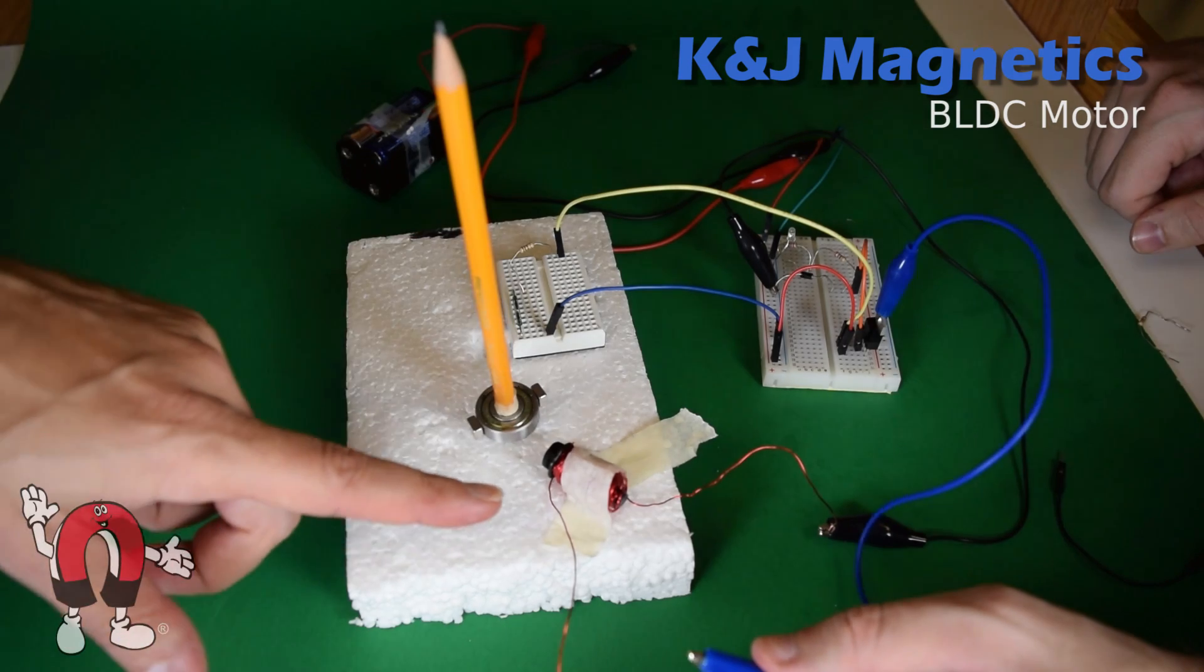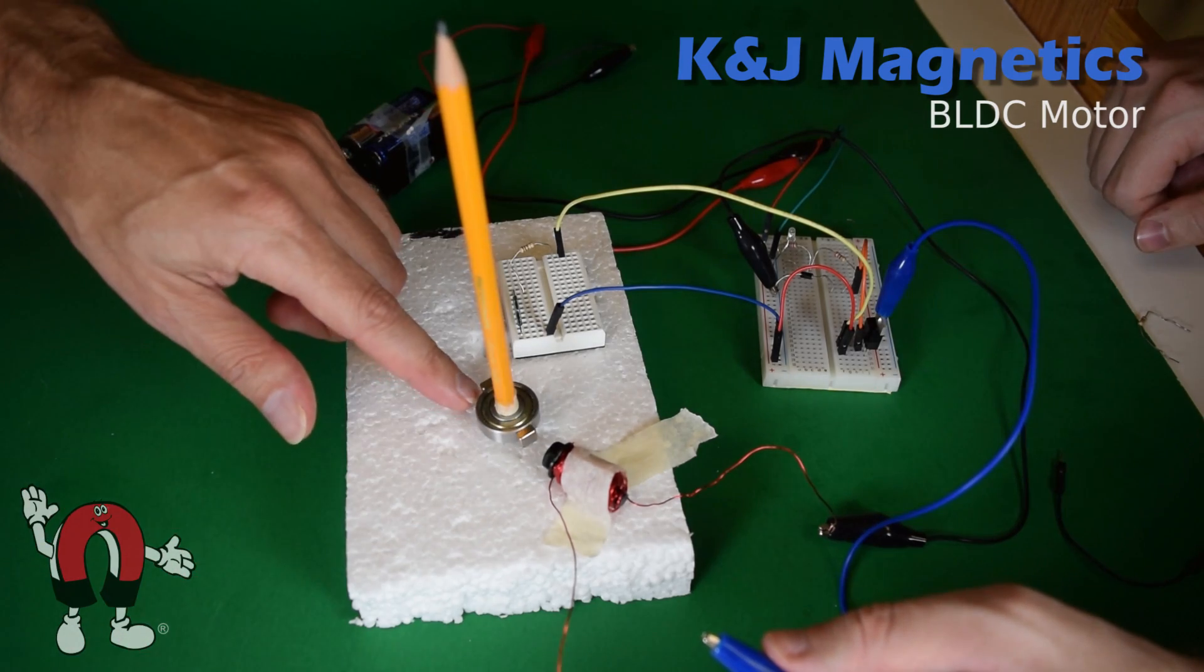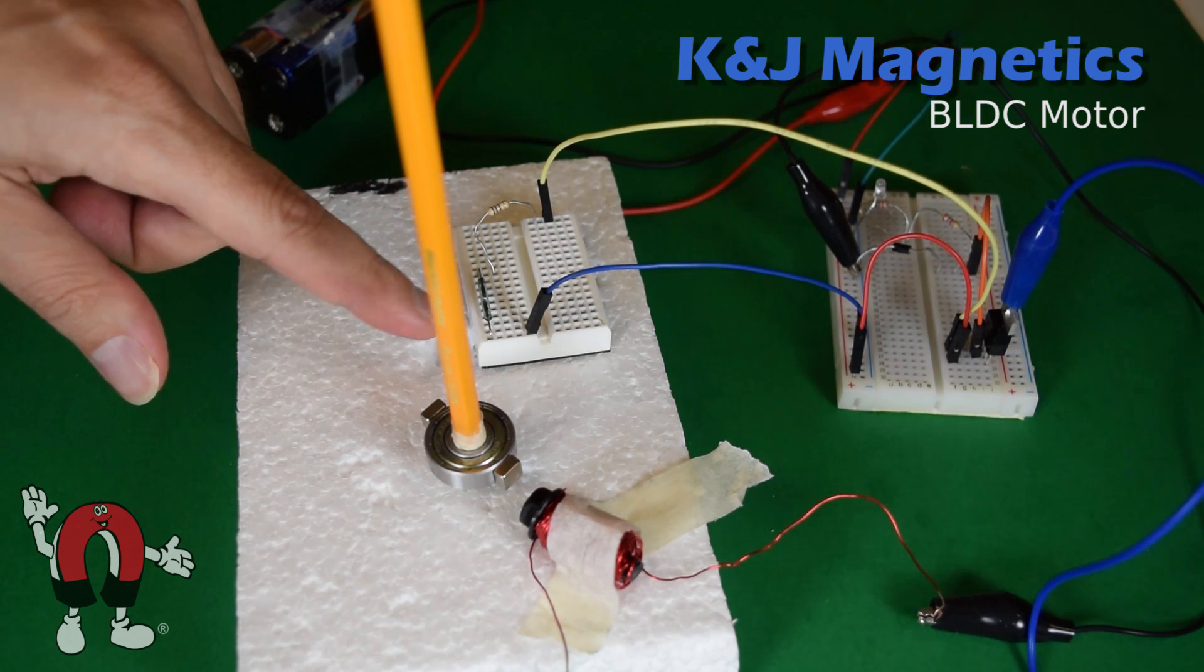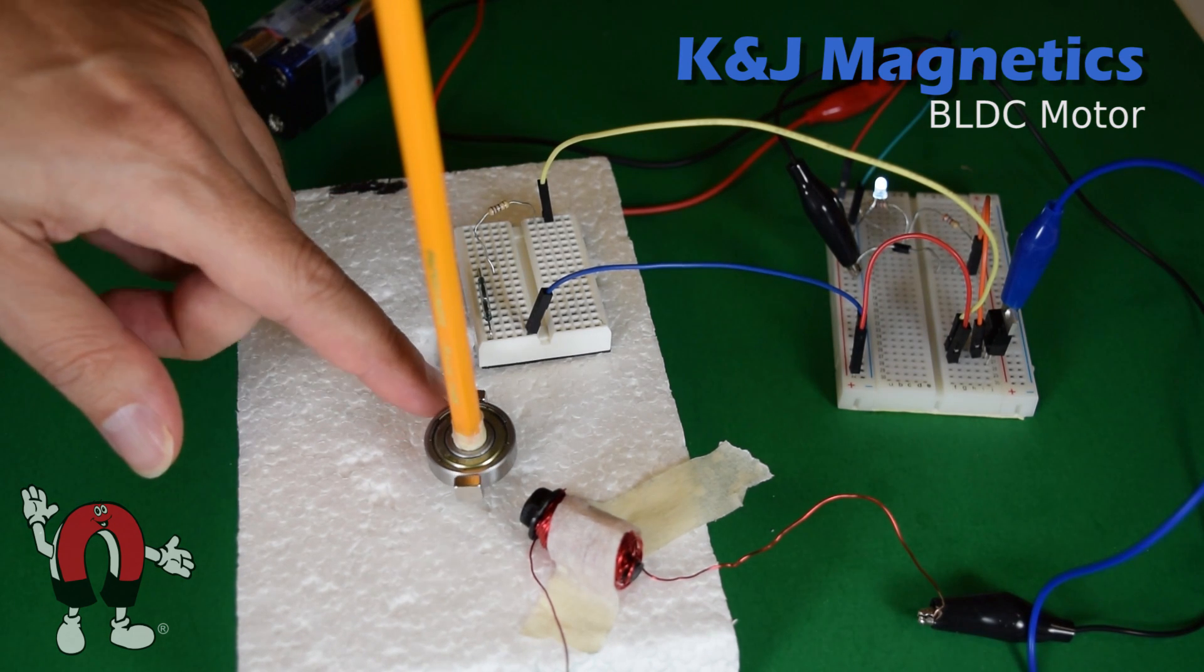We've also got an electromagnet, a bunch of wire turned around a steel bolt, and a reed switch. This is a little magnetic sensor that can tell us when a magnet passes by.